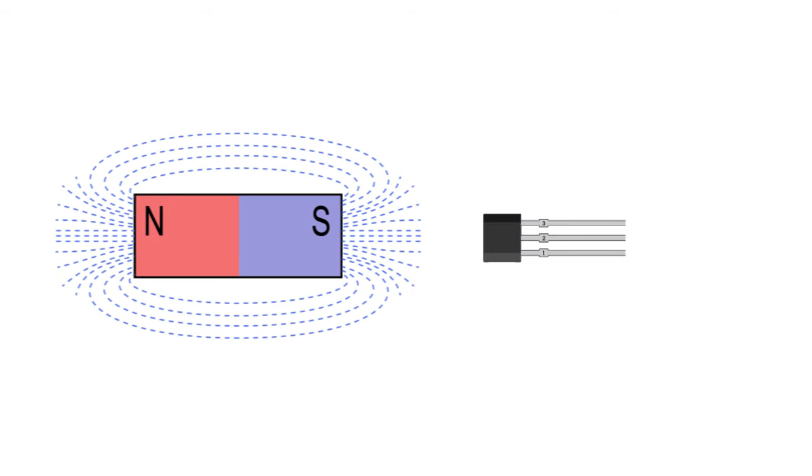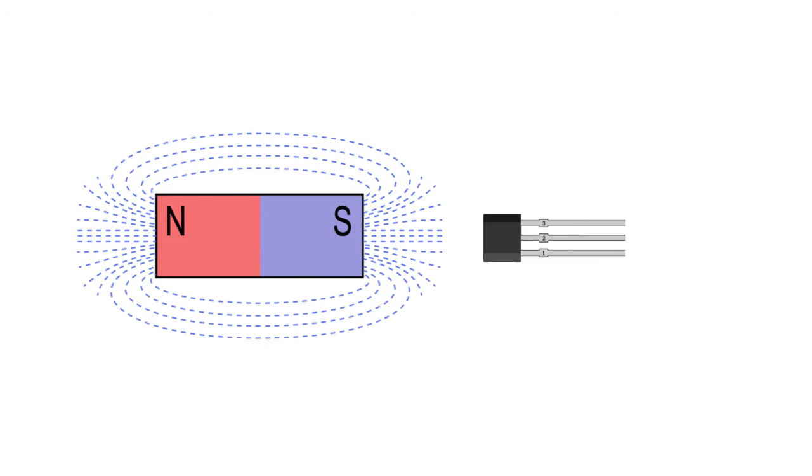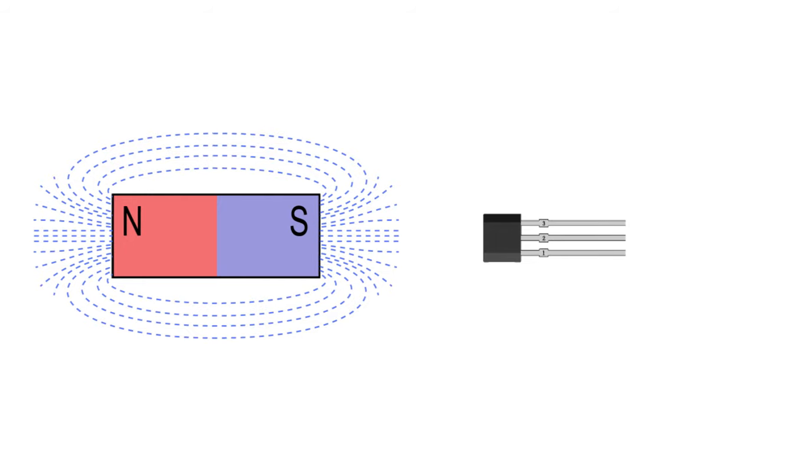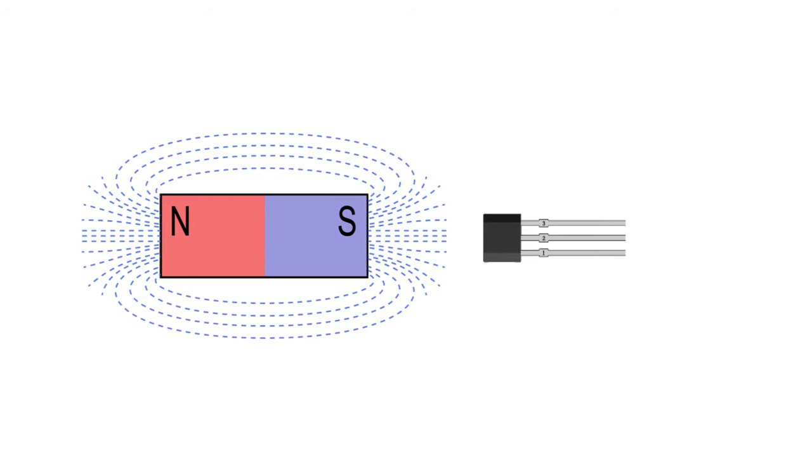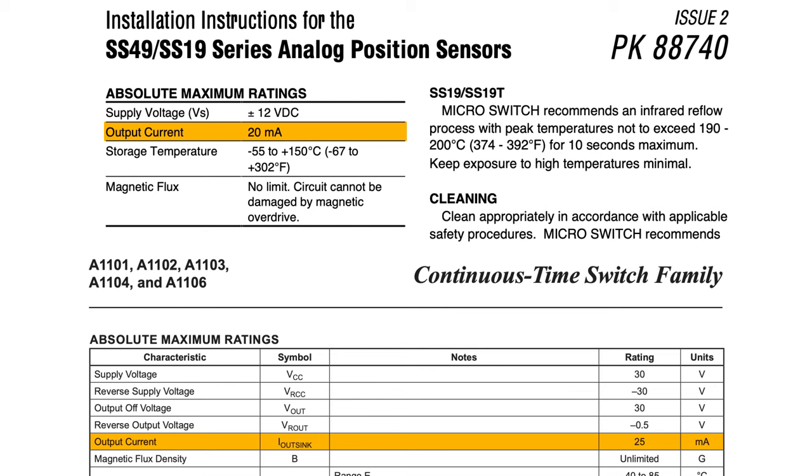To ensure maximum sensitivity, the flux lines should always be perpendicular, with the magnet's pole, where the flux is strongest, pointing at the face of the sensor. The output drive capabilities of Hall effect sensors are very small, so they cannot directly switch large electrical loads.